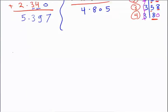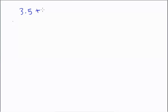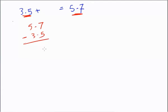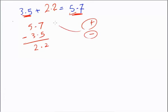Now we study missing number problems. For example: 3.5 plus what equals 5.7? The two numbers are 2 apart from each other. So I do subtraction: 5.7 minus 3.5. 7 minus 5 equals 2, and 5 minus 3 equals 2, so the answer is 2.2. Let's check: 3.5 plus 2.2 equals 5.7. If you can't remember, try addition and subtraction together, then check your answer.